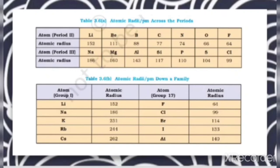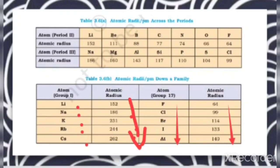For the group elements, comparing the first group — lithium, sodium, potassium, rubidium, cesium — the atomic radius values increase as we move from top to bottom, because of the increase in the number of shells. Atomic radius is the distance from the nucleus to the outermost shell of electrons. Similarly, for the 17th group elements — fluorine, chlorine, bromine, iodine — the atomic radius also increases from top to bottom.